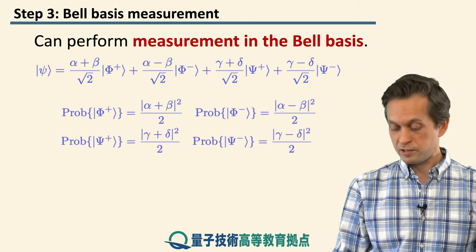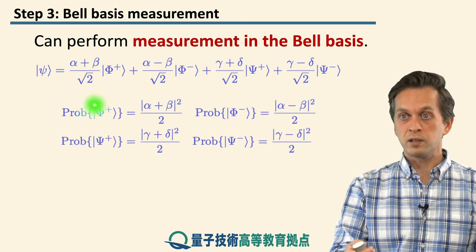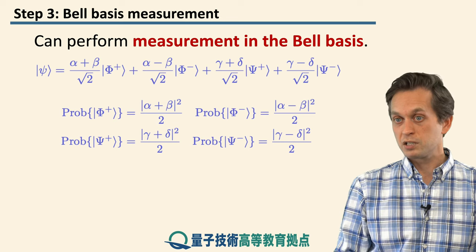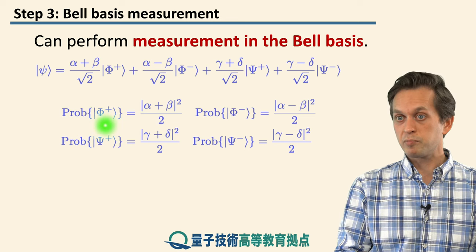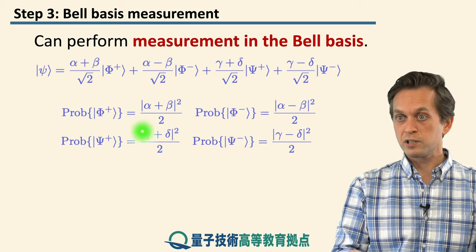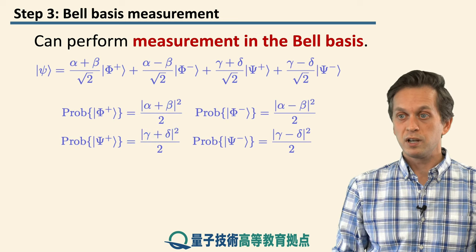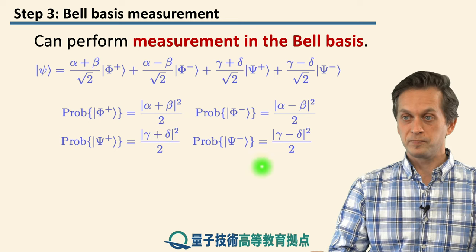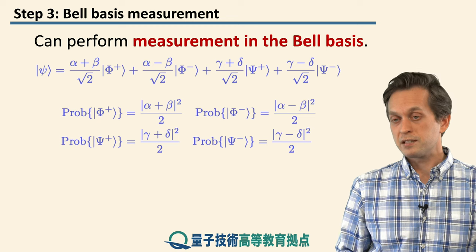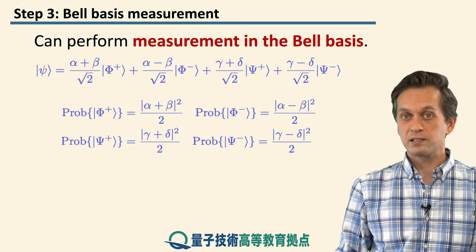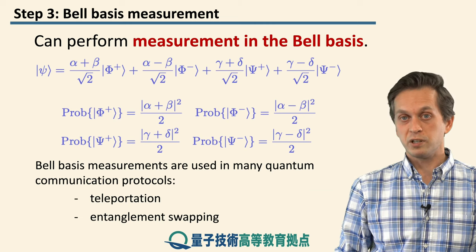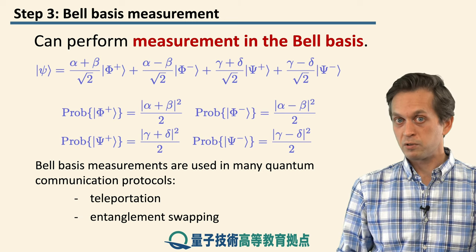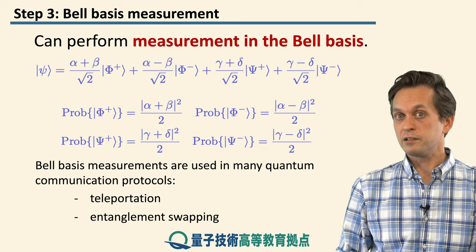Here are the probabilities. Since we already wrote the state psi in the Bell basis, it is very easy to read out the probabilities of measurement outcomes. We measure psi-plus with probability |alpha plus beta|² over 2, and similarly we can read off the probabilities for the other outcomes. This is very important because measurements in the Bell basis are crucial in many protocols in quantum communication — namely, teleportation and entanglement swapping — which we will look at closely later in this module.